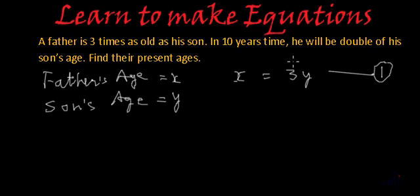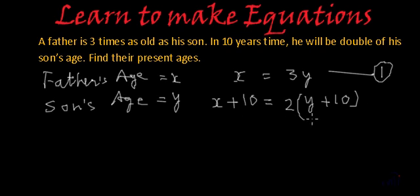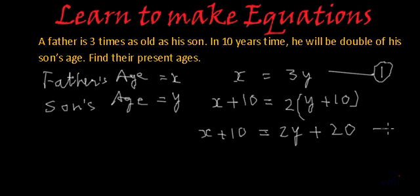In 10 years time he will be double of his son's age. So after 10 years, father's age will be x plus 10 and son's age will be y plus 10. At this time father will be 2 times older than his son, so x plus 10 equals 2 times y plus 10. Opening the bracket gives x plus 10 equals 2y plus 20. Let's call this equation number 2.